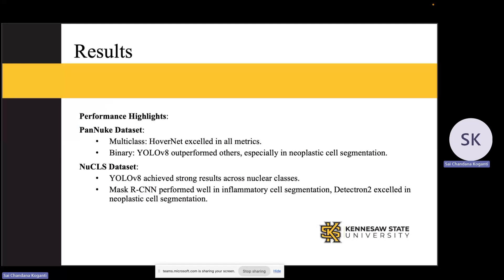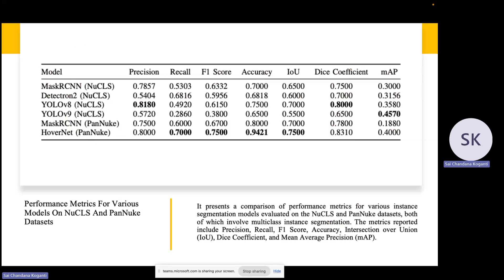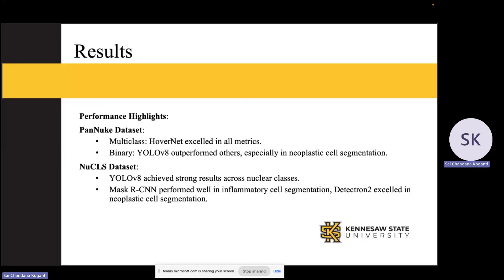Finally, in multi-class segmentation on the PanNuke dataset, HoverNet performed the best across all metrics, as highlighted here. In binary segmentation, YOLOv8 showed the strongest results, especially for neoplastic cells. For the NuCLS dataset, YOLOv8 achieved high precision, Mask R-CNN was effective for inflammatory cell types, and Detectron2 excelled with neoplastic cell types. These results show that each model has its strengths depending on the task, making it important to choose the right model based on specific pathology needs.